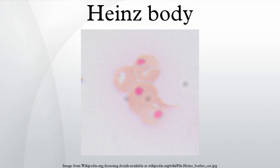Damaged cells are cleared by macrophages in the spleen, where the precipitate and damaged membrane are removed, leading to characteristic bite cells. The denaturing process is irreversible, and the continual elimination of damaged cells leads to Heinz body anemia.